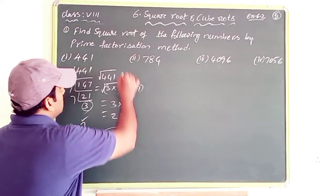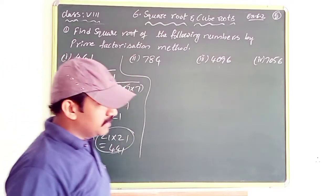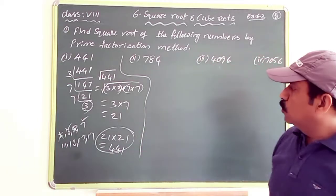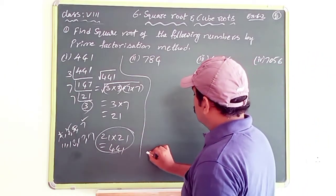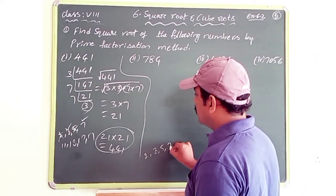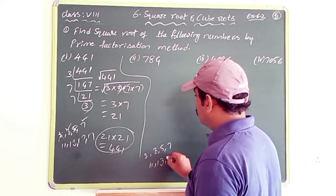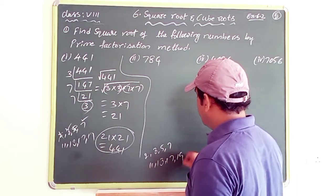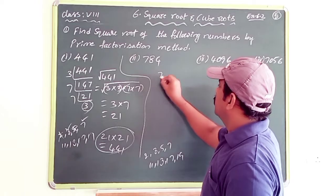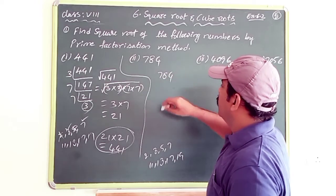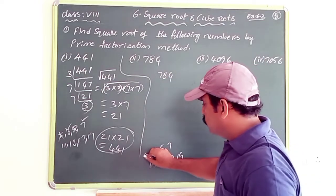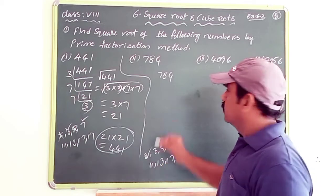The next example is 784. Using the same logic, I check divisibility: the last digit of 784 is 4, which is even, so it is divisible by 2.